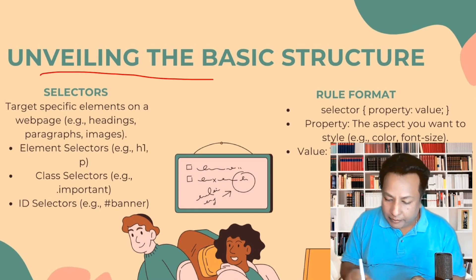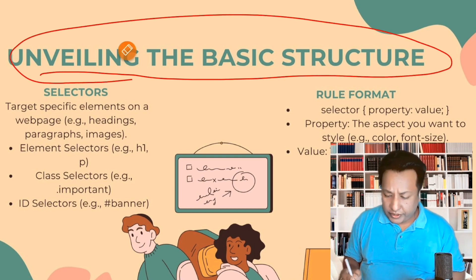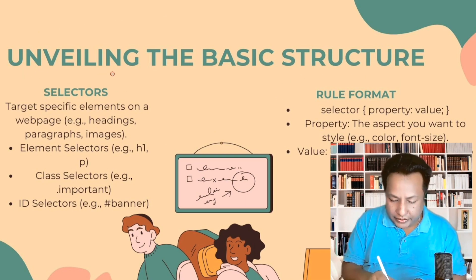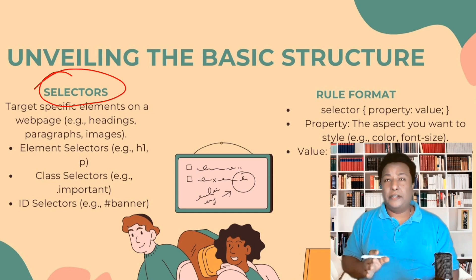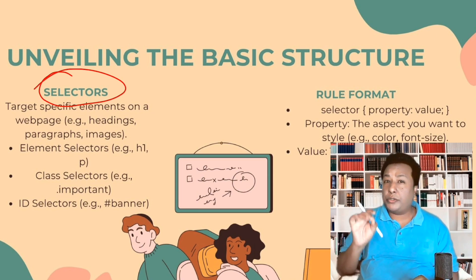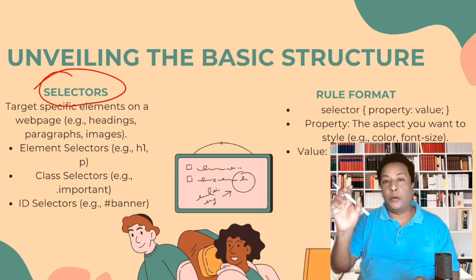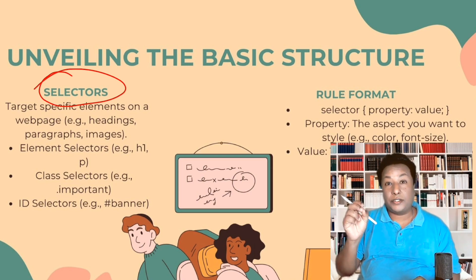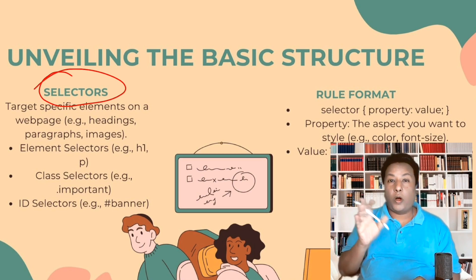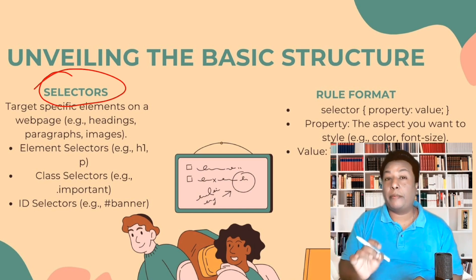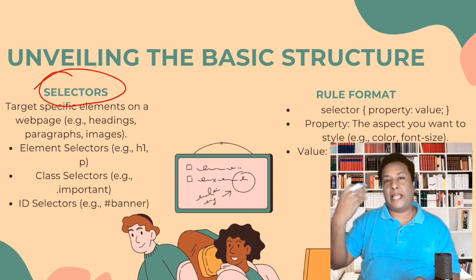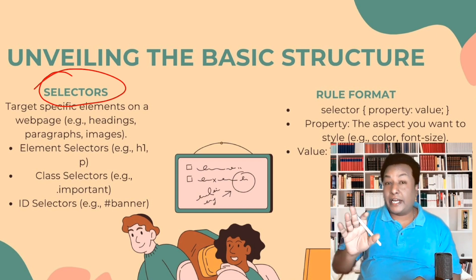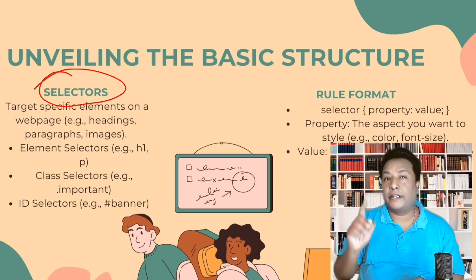Let's dive into the basic structure of CSS. The most important thing is called the selector. You have created a web page and you want to change the style of a particular part. For example, you may have a div, and you can give it an id or a class. We also have h1 tags, p tags — many different elements inside our HTML that we want to design.